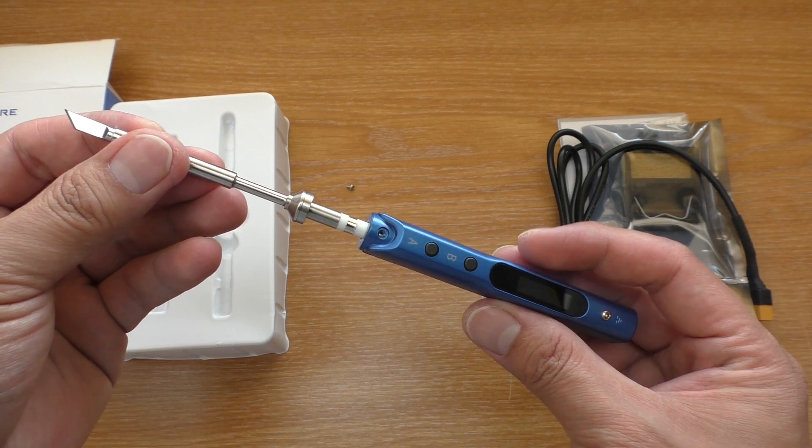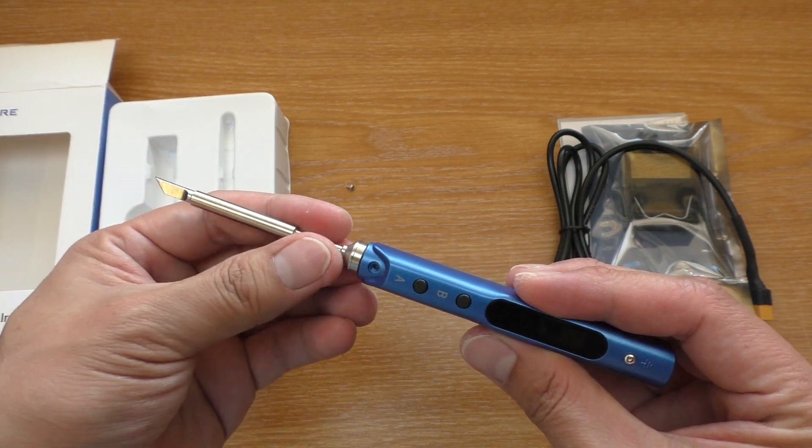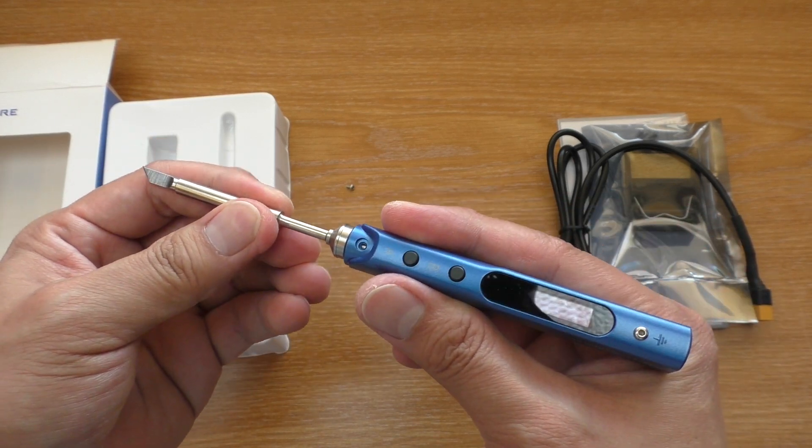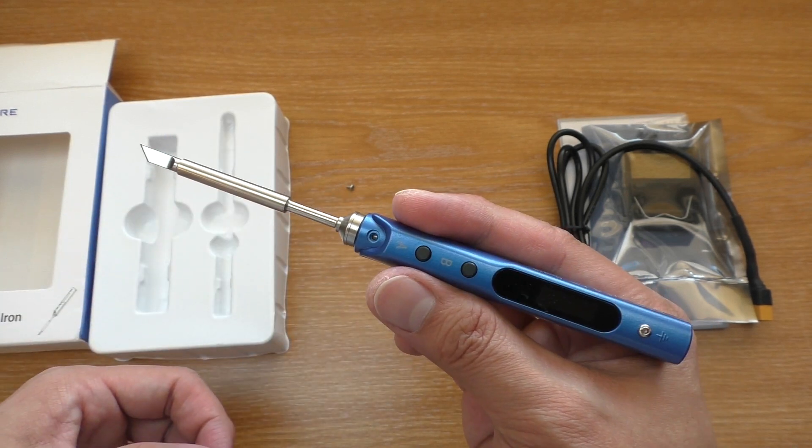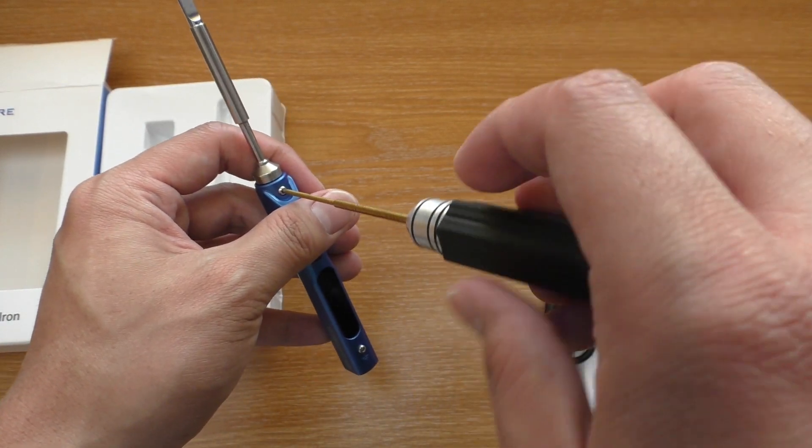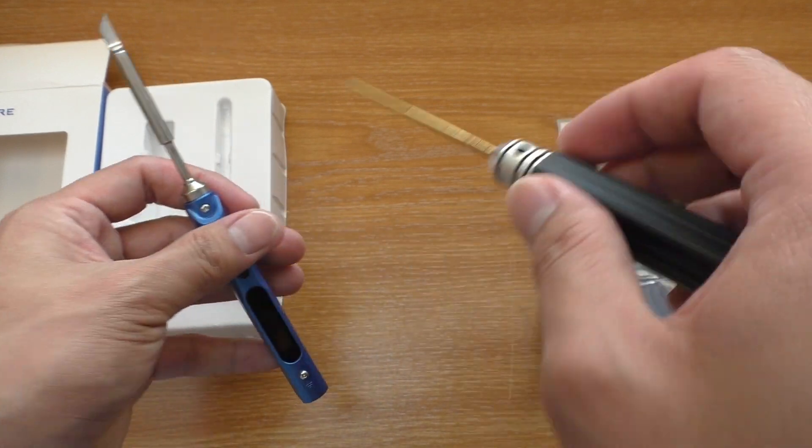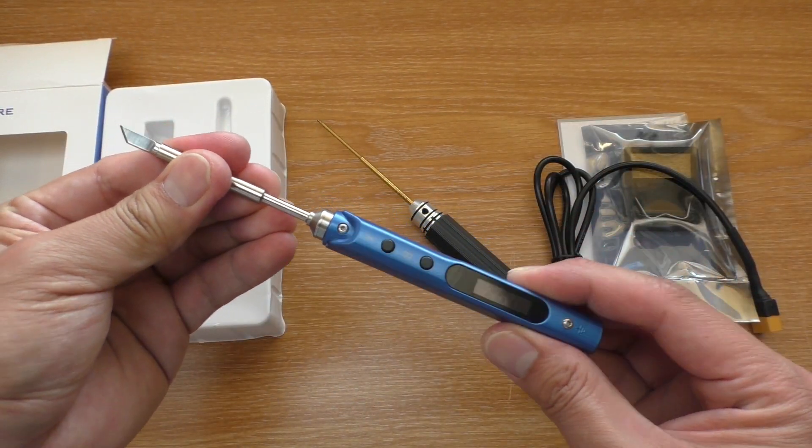Now let's put the tip in like this. It is pretty tight in here so it will work even without the screw. But let's tighten it down anyway. And don't forget to loosen the screw when you change the tip.